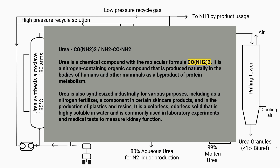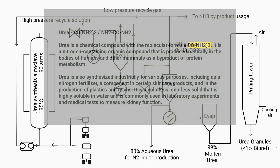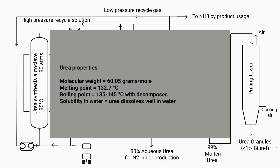Urea is also used as a component in certain skincare products and in the production of plastics and resins. It is a colorless, odorless solid that is highly soluble in water and is commonly used in laboratory experiments and medical tests to measure kidney function. Urea has a molecular weight of 60.05 grams per mole, a melting point of 132.7 degrees Celsius, and a boiling point range of 135 to 145 degrees Celsius, at which it decomposes. Furthermore, urea dissolves well in water.